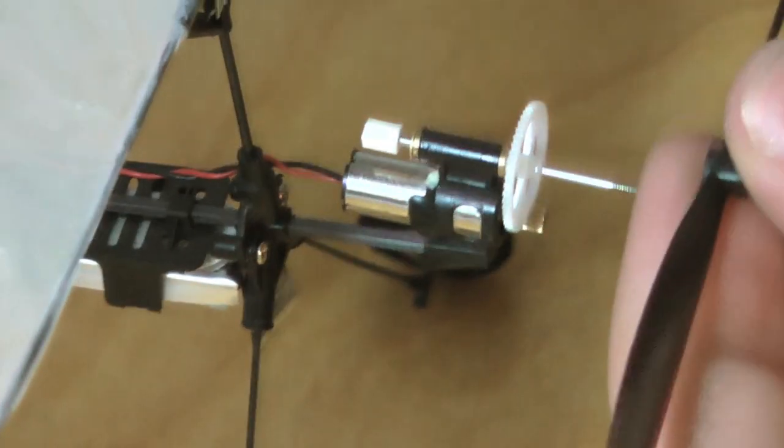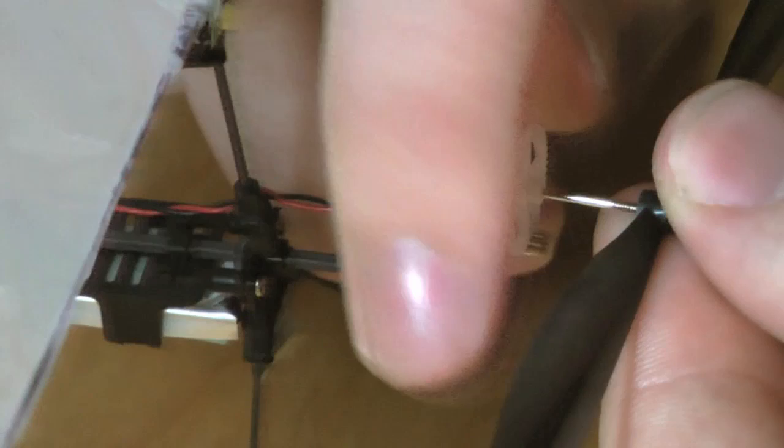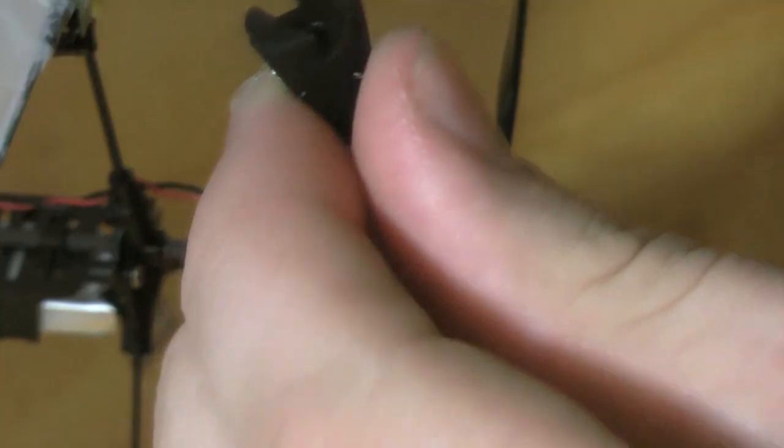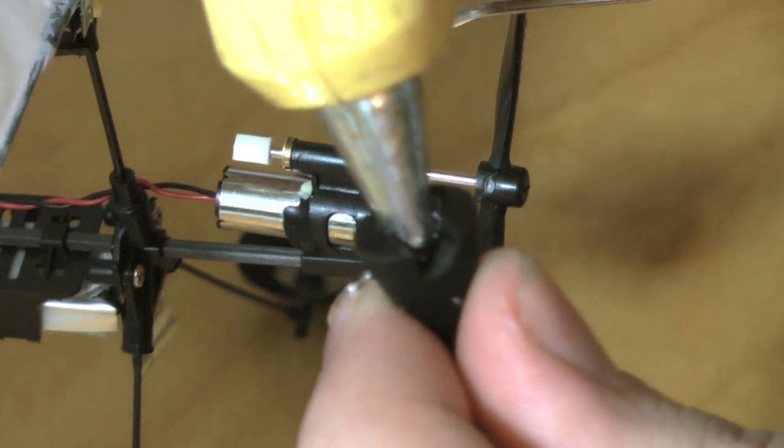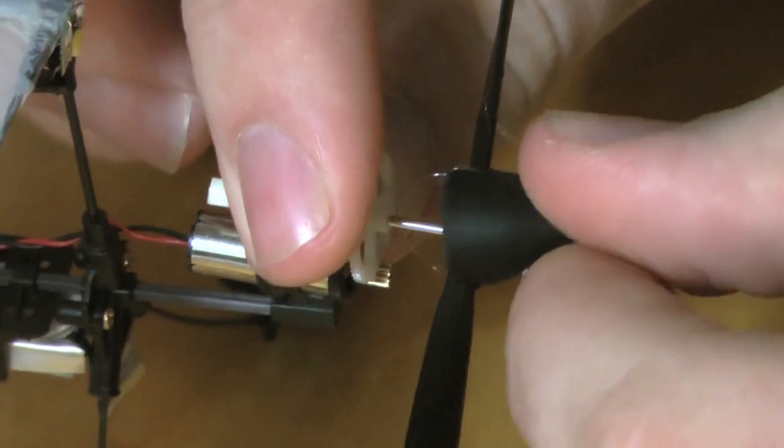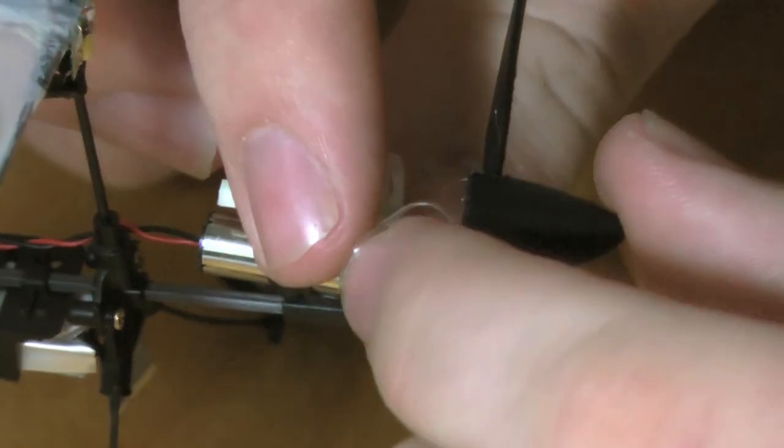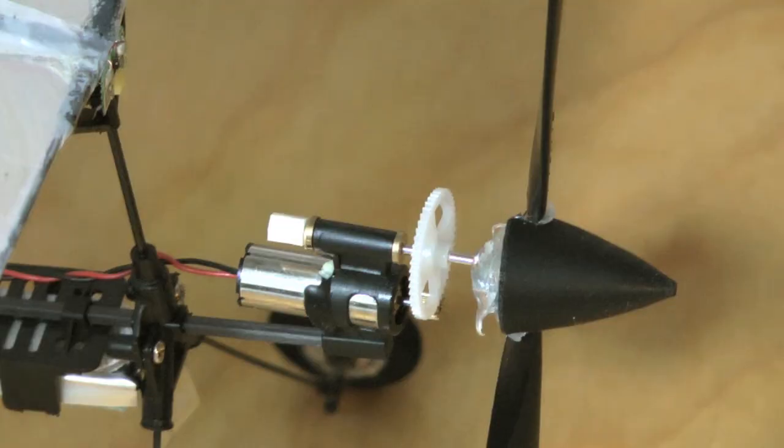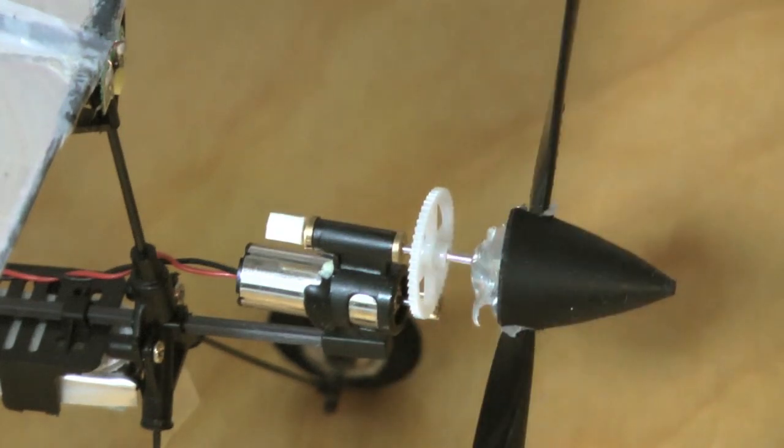The prop simply screws on. To attach the cowling, simply put a dab of hot glue on the inside and press it onto the propeller. Then I reinforced it with a little bit more hot glue.